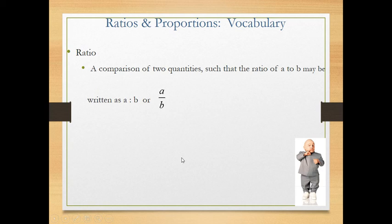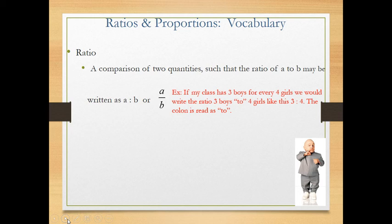For example, if my class has three boys for every four girls, we could write the ratio three to four like this: 3:4. Remember, the colon is read as the word 'to'.